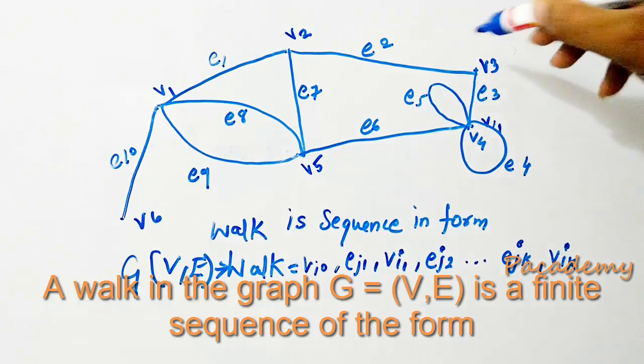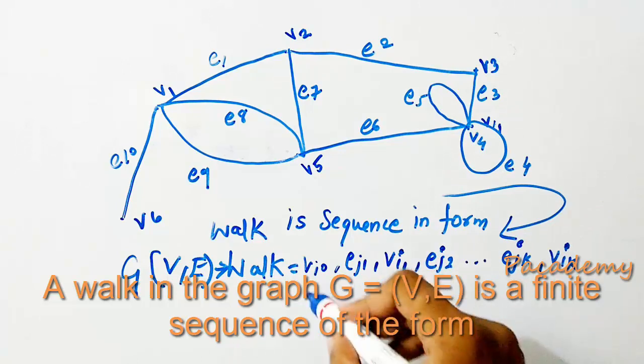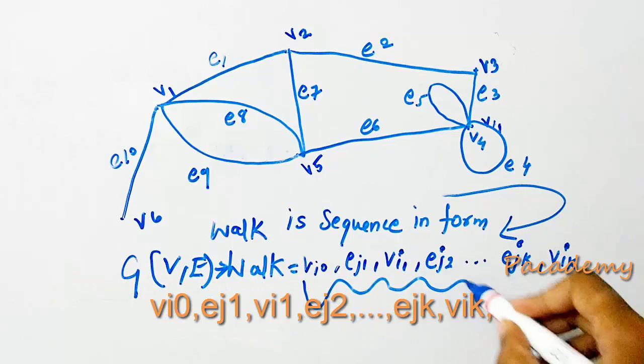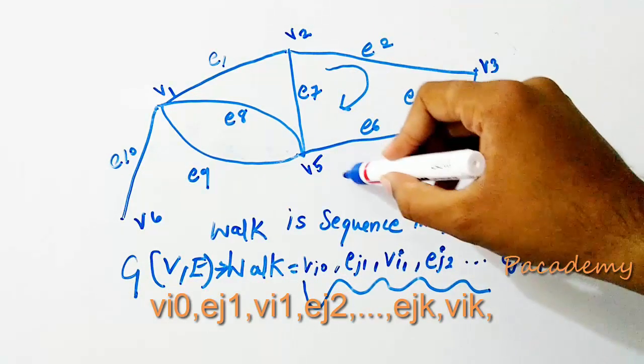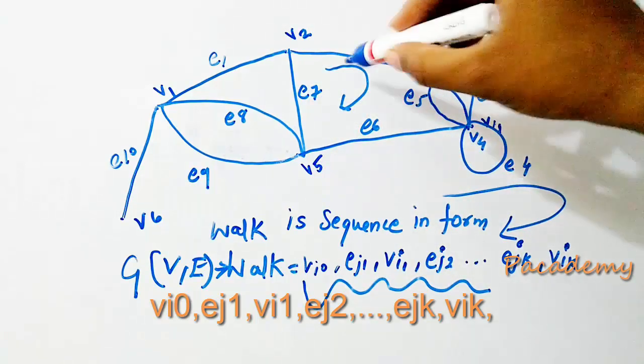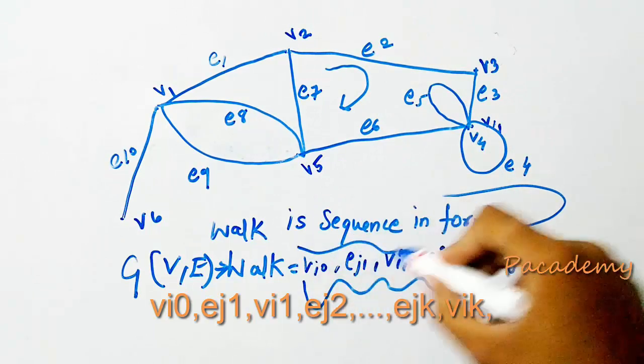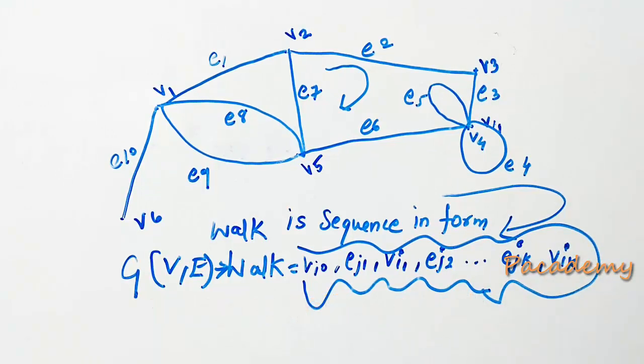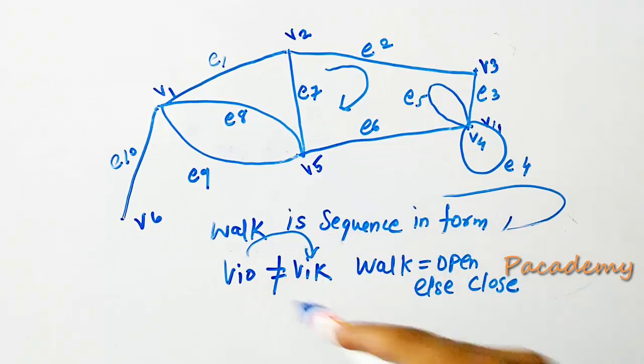For any graph, a walk is a sequence in the form written as vi, note ej1, vi1, vj2. It's a movement through the vertices and the edges in the form as stated here.